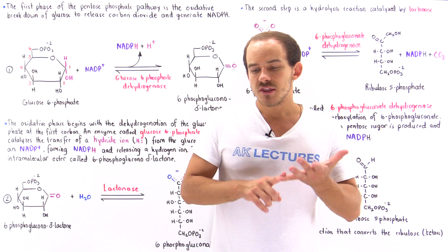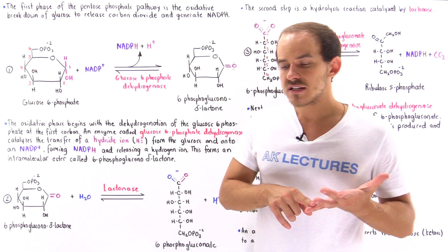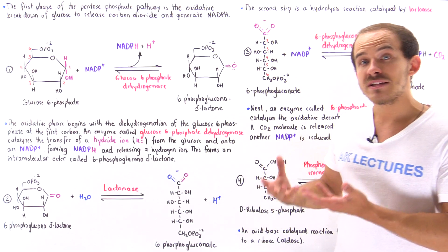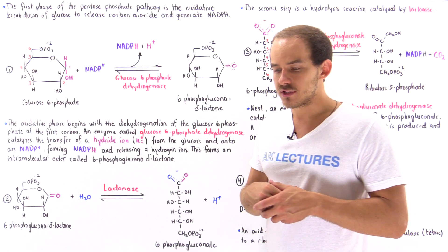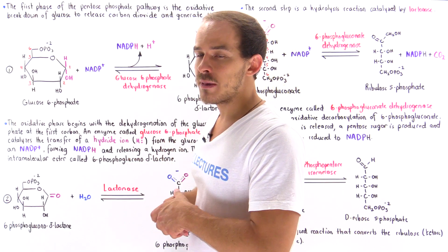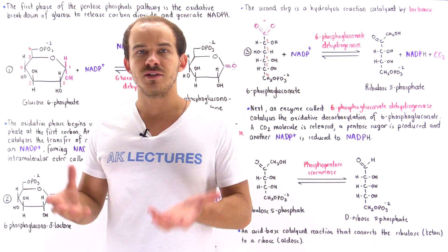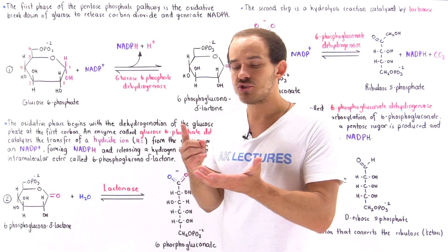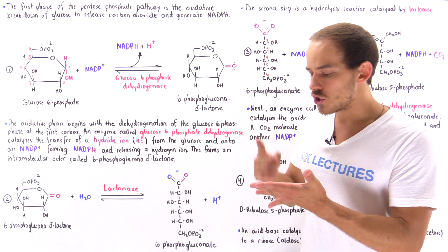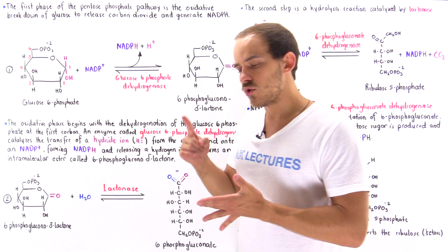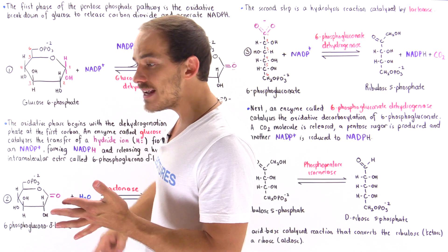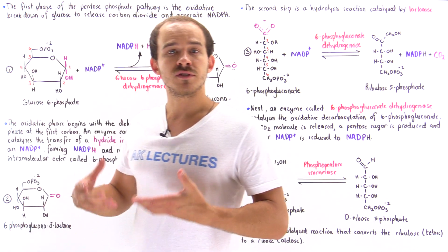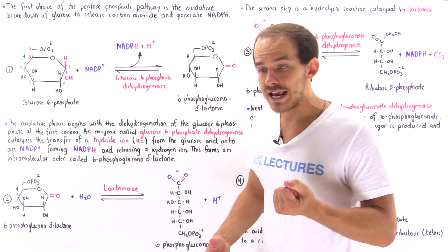Number one, the pentose phosphate pathway gives us a way to generate 5-carbon pentose sugar molecules, and we use these pentose sugar molecules to generate biological molecules such as DNA molecules, RNA molecules, ATP molecules, NADH and FAD molecules. It also gives us a way to generate coenzyme A.